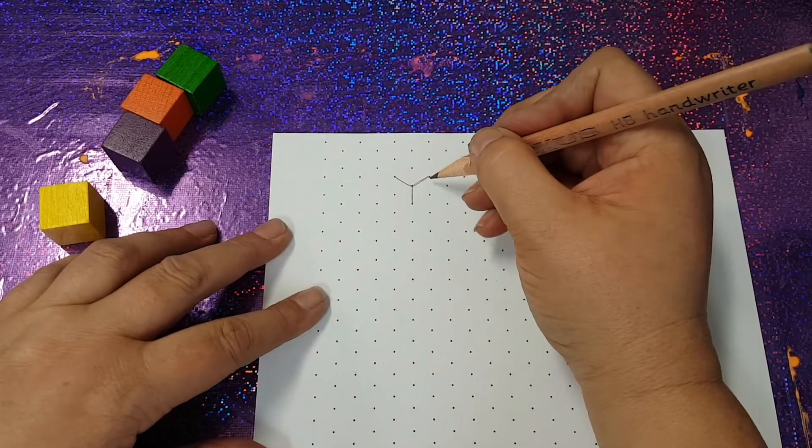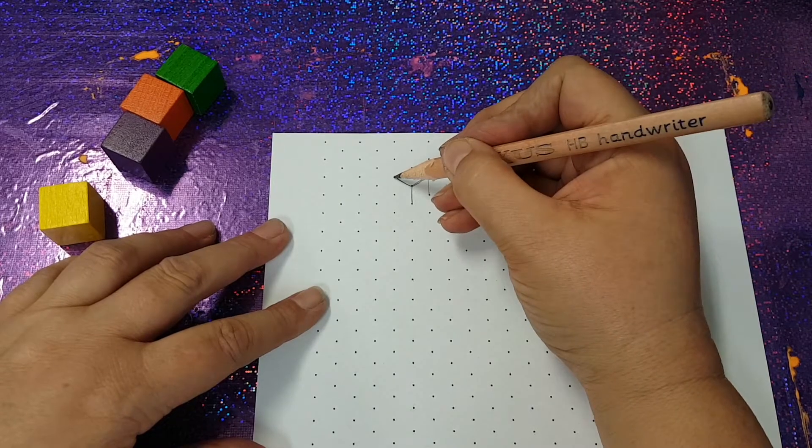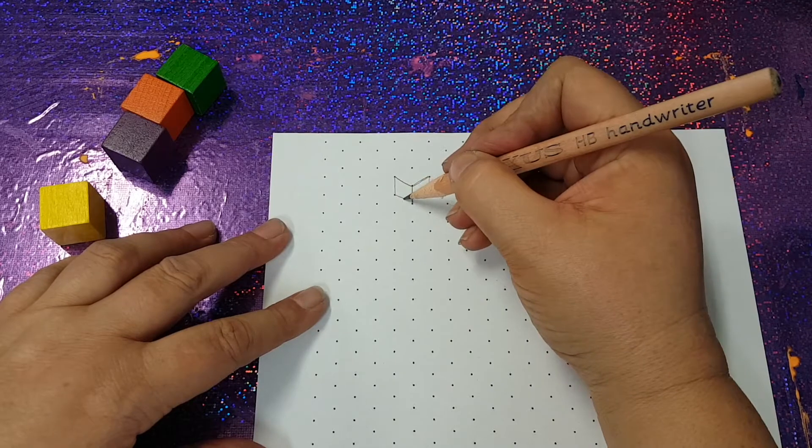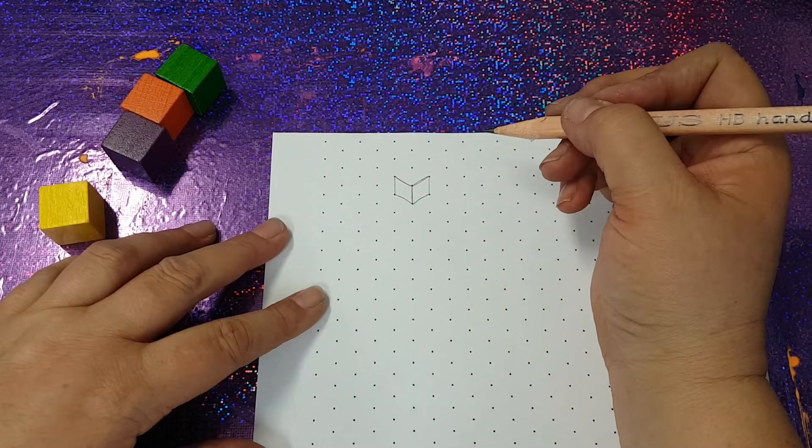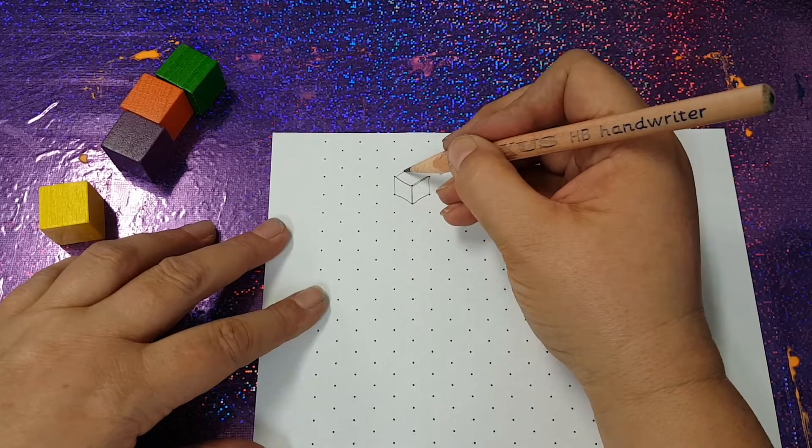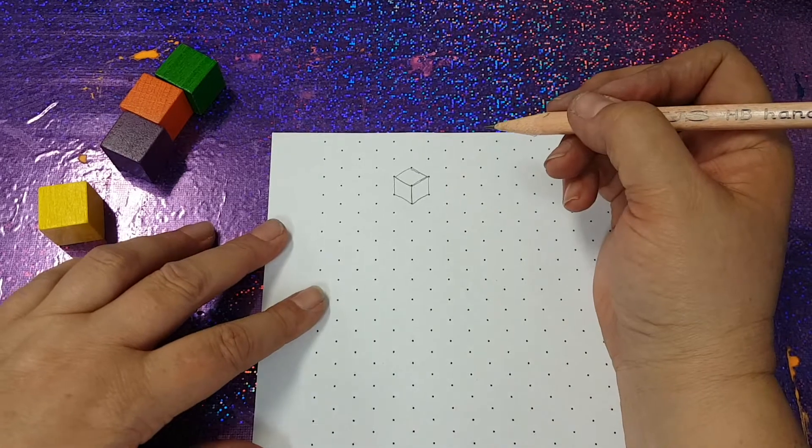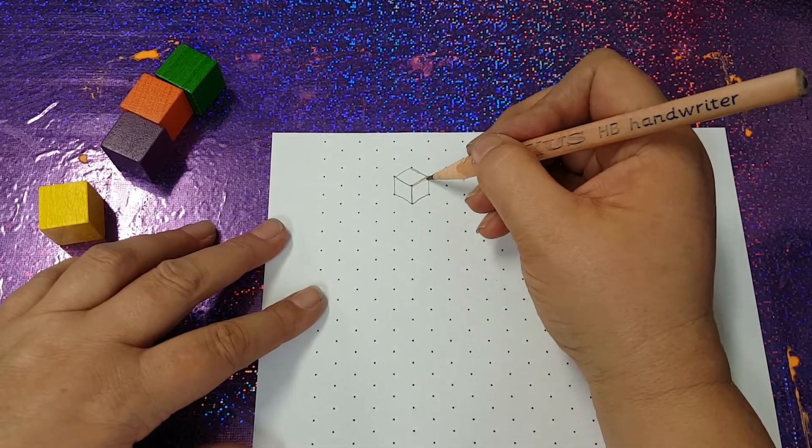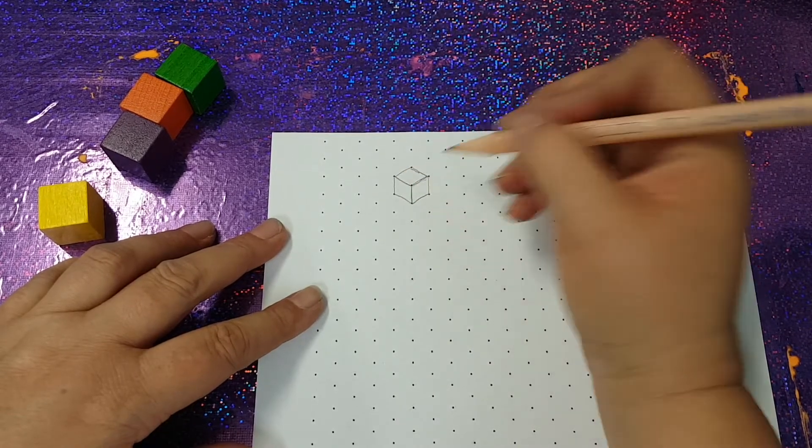Now all you simply need to do is from the top of this Y come down and from the top of this side of the Y come down and then join these up. So you've basically got two diamonds that look like an open book and if you see here we can just join the top of this up and the top of this up and we have a cube. So you start with the Y, make a diamond here, a diamond here and a diamond at the top.